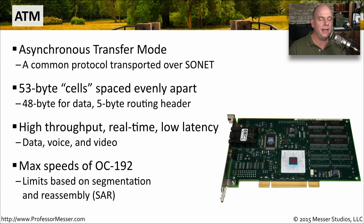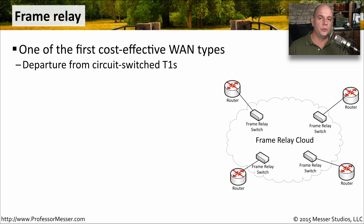ATM did not really catch on as we thought it might. We ended up having higher-speed ethernet take over on the LAN, and ATM was never really able to make the jump on the WAN side. On our wide area networks, we used to put up circuits from one point to the other, and these point-to-point T1 or T3 links were nailed up, running all the time whether we were sending traffic over that link or not.